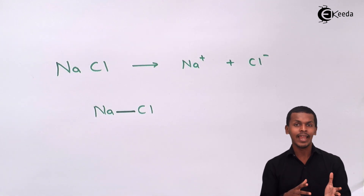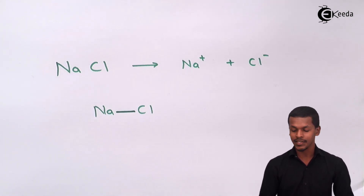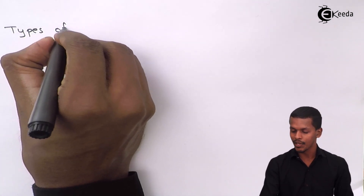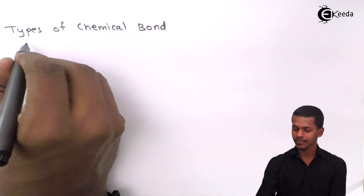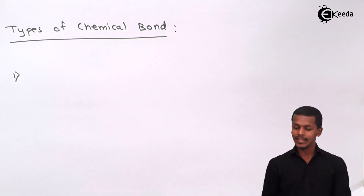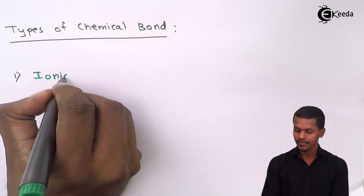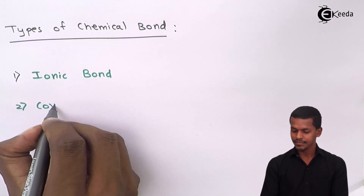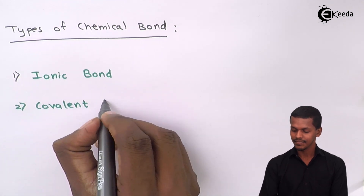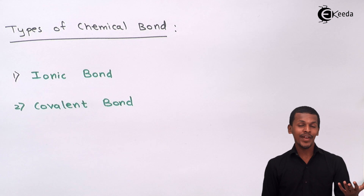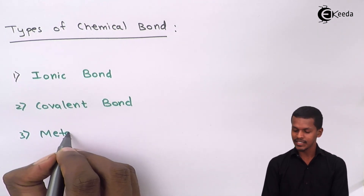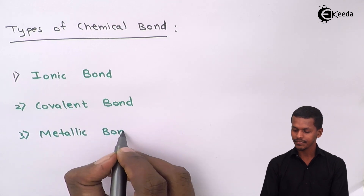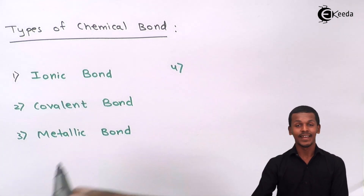Now, what are the different types of chemical bond? The first one is ionic bond, the second is covalent bond, the third is metallic bond, and the fourth is molecular bond.